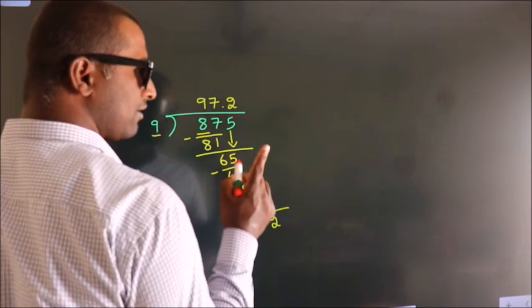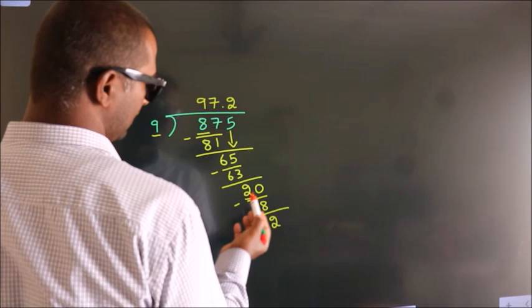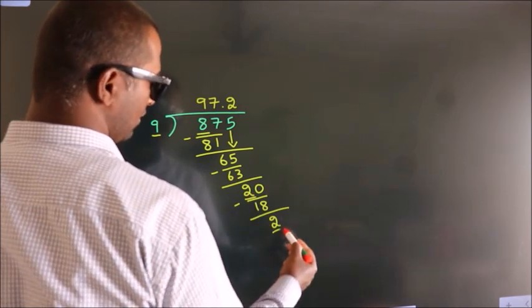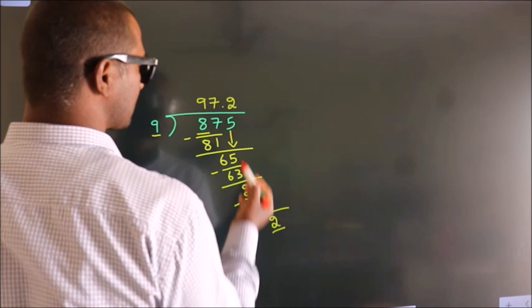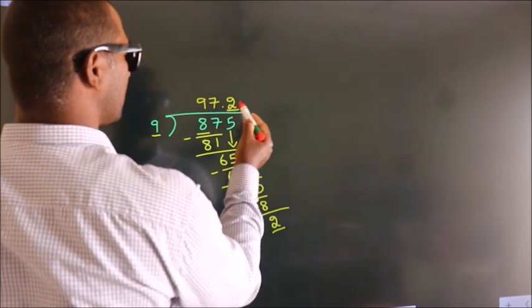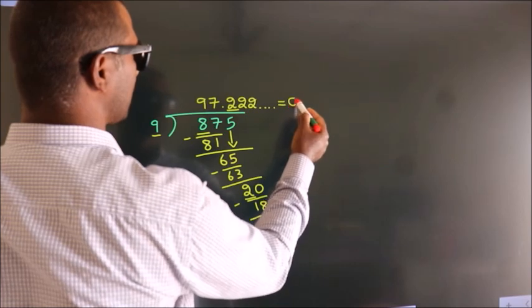Now you observe, we had 2 here and we got 2 again. That means this number keep on repeating. So this is our quotient.